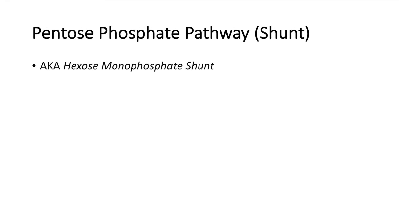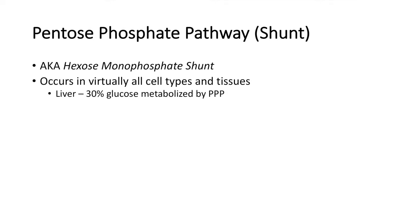So to begin, what is the pentose phosphate pathway? The pathway is also known as the hexose monophosphate shunt. It occurs in virtually all cell types and tissues. One of the main utilizers of the pathway is the liver, which utilizes 30% of its glucose for the pentose phosphate pathway. Other major users include red blood cells, while muscles don't utilize this pathway very much.